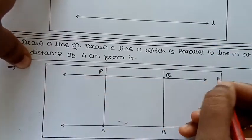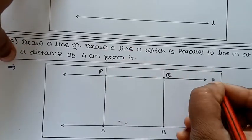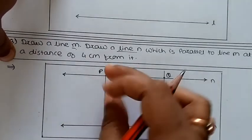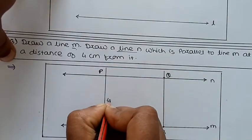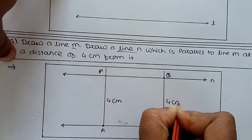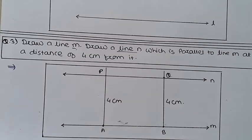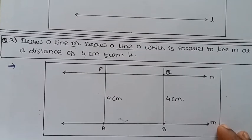Join P and Q to get one parallel line. The distance between the two parallel lines is four centimeters. In this way we draw a parallel line to the given line using set squares. This is the last practice set of chapter number two — Parallel Lines and Transversal. I hope you understand from this video. Please like, subscribe, and share it with your friends. Thank you, students.